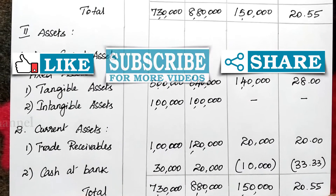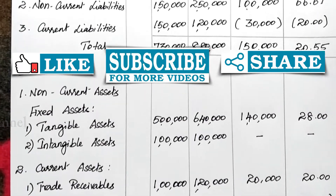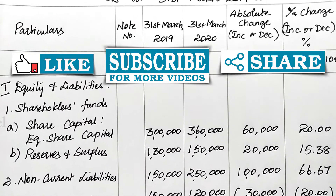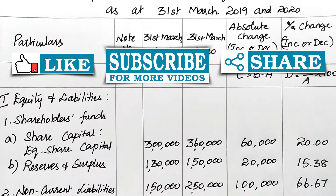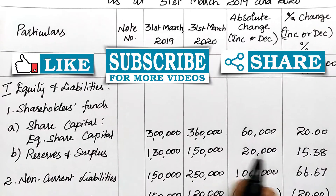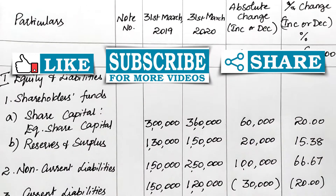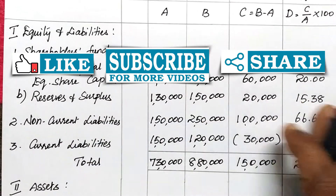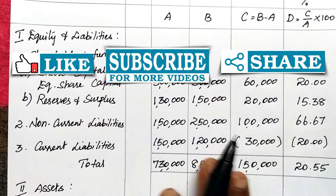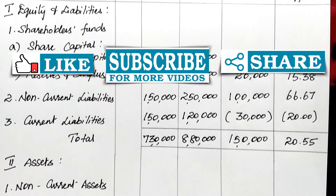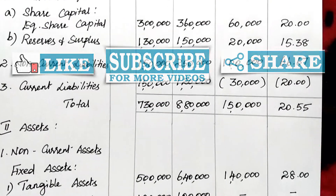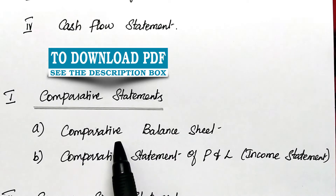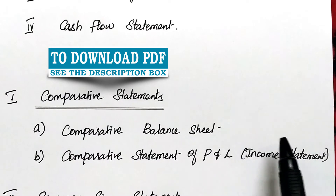This is the way to prepare the comparative balance sheet. We have calculated the percentage change for each and every component in a horizontal format, comparing each component of balance sheet items across two years.